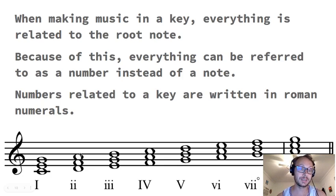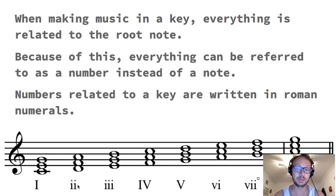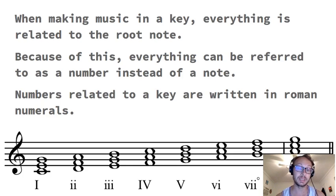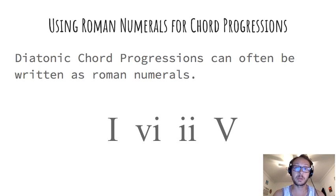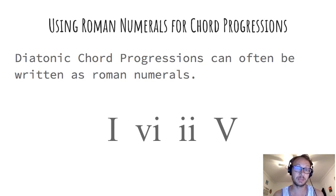Uppercase Roman numerals indicate major chords; lowercase indicates minor chords. Since everything is related to the root note — which is one — everything can be referred to by a number. Two is the second note of the scale, three is the third, four is the fourth, and so on. For chord progressions, we use Roman numerals to indicate a diatonic chord progression, which shows the movement of chords in a song, each chord being related to the key.